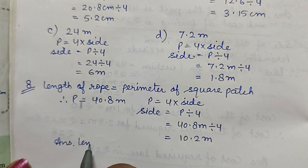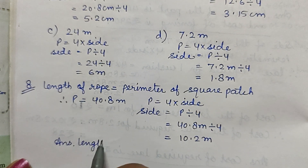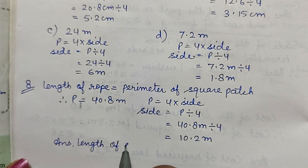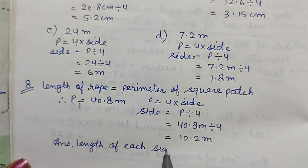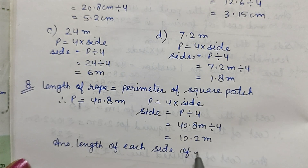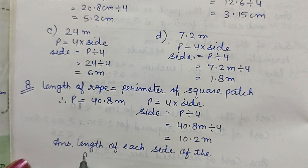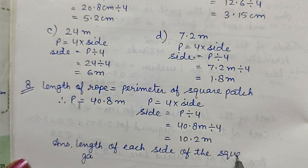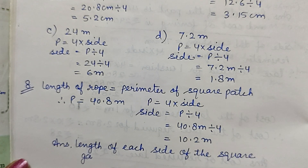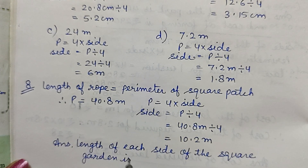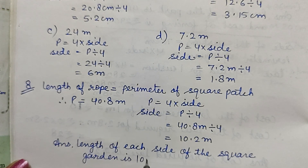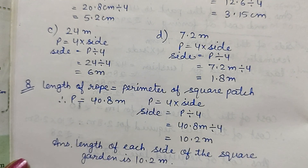The length of each side of the square garden is 10.2 meters.